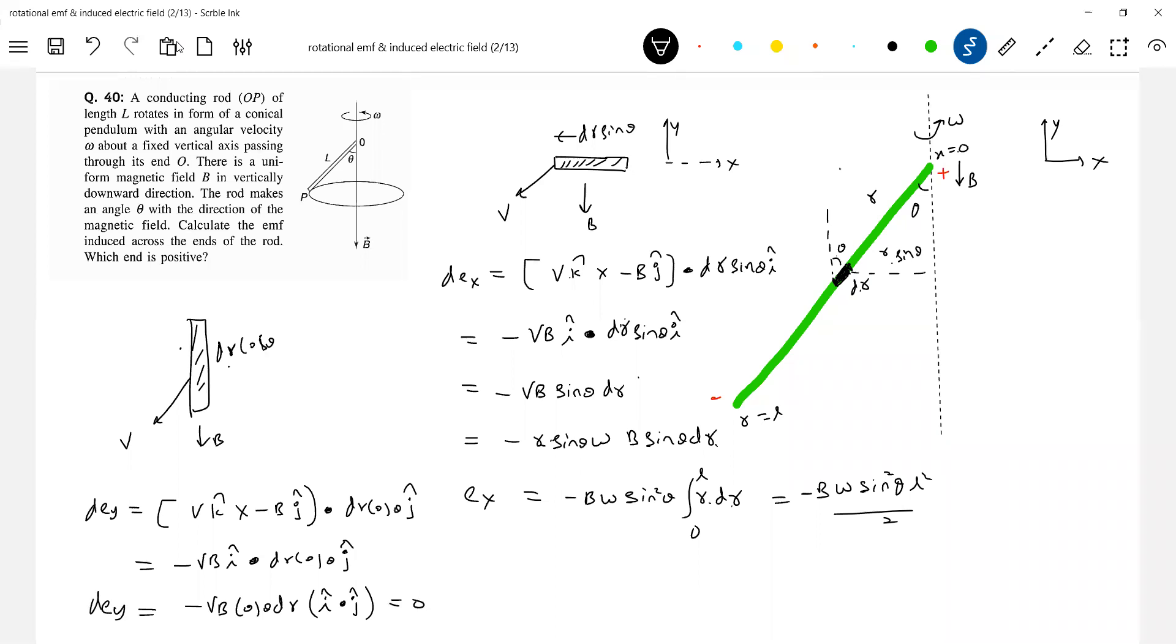So no EMF will be induced due to the y component, that one. So therefore, this should be our answer. Total EMF equal to Ex plus Ey. Magnitude I'm writing: B omega, B omega.